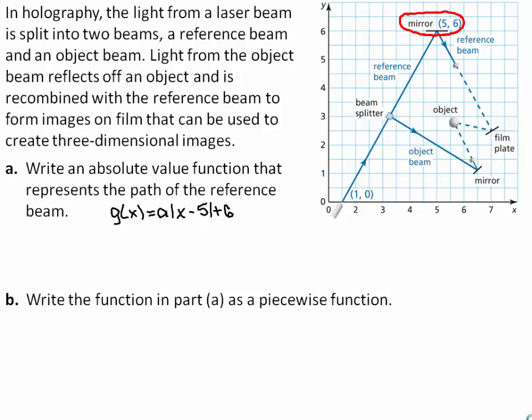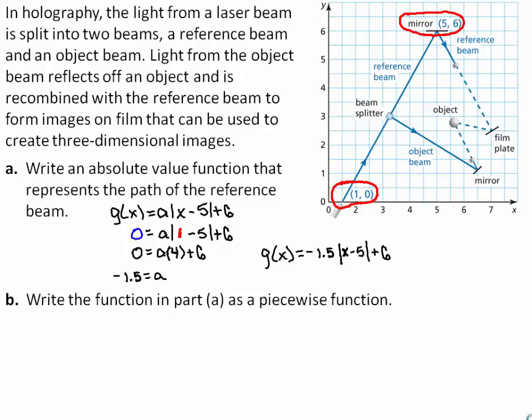Substitute the coordinates of the given point into the equation and solve for a. The absolute value of the quantity is 4, so you have 0 equals a times 4 plus 6. Solving for a, you get negative 1.5. So the function g equals negative 1.5 times the absolute value of the quantity x minus 5, plus 6, represents the path of the reference beam.